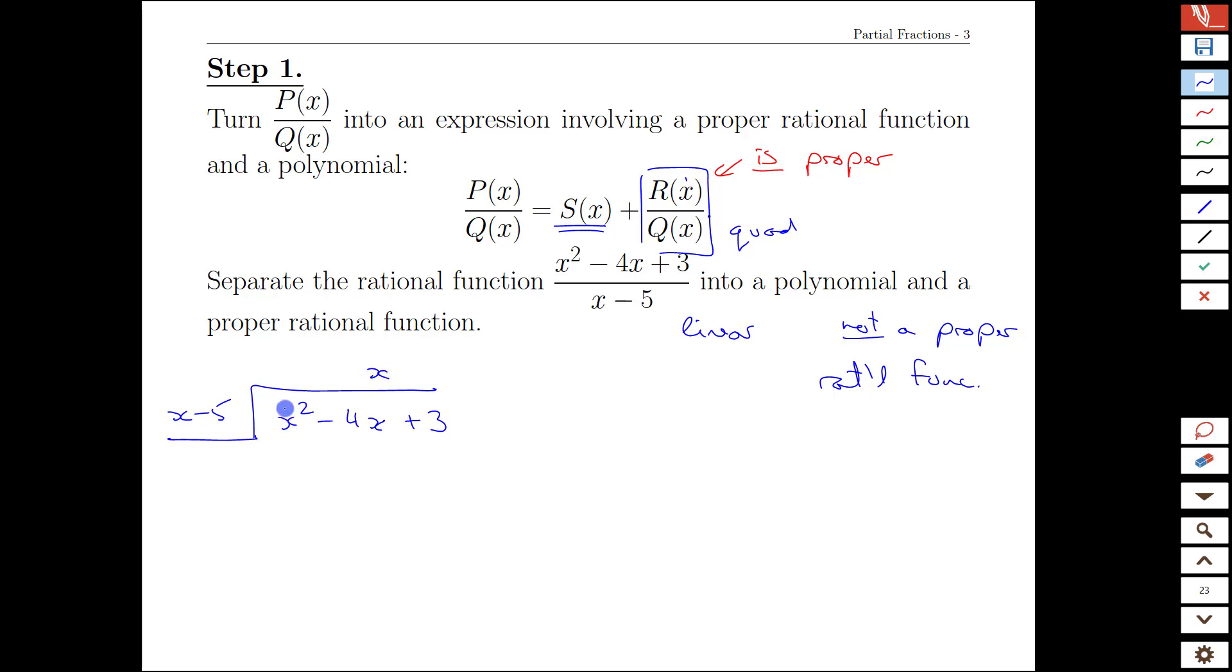Well, it goes in x times. So we take this x here. We multiply it by all these terms to give ourselves x squared minus 5x, and then we take all of that and subtract it from the expression we started with. That cancels out our x squareds. We have minus 4x plus 5x. That gives us plus 1x when we're done, plus a 3, and then we repeat for the constant term.